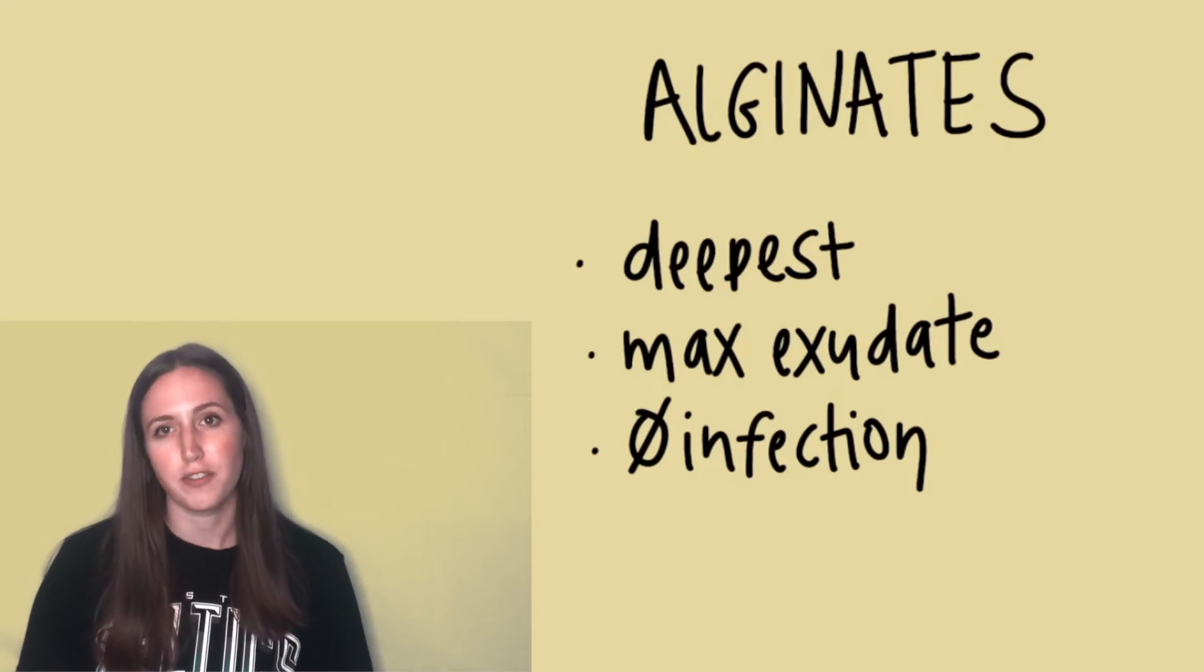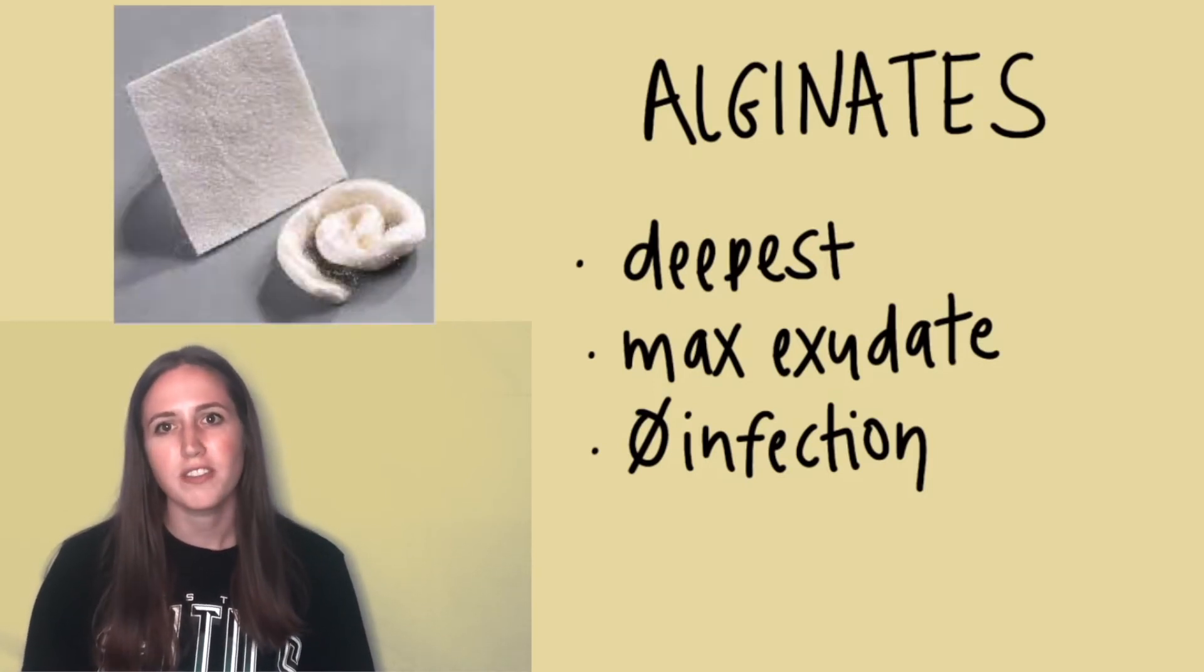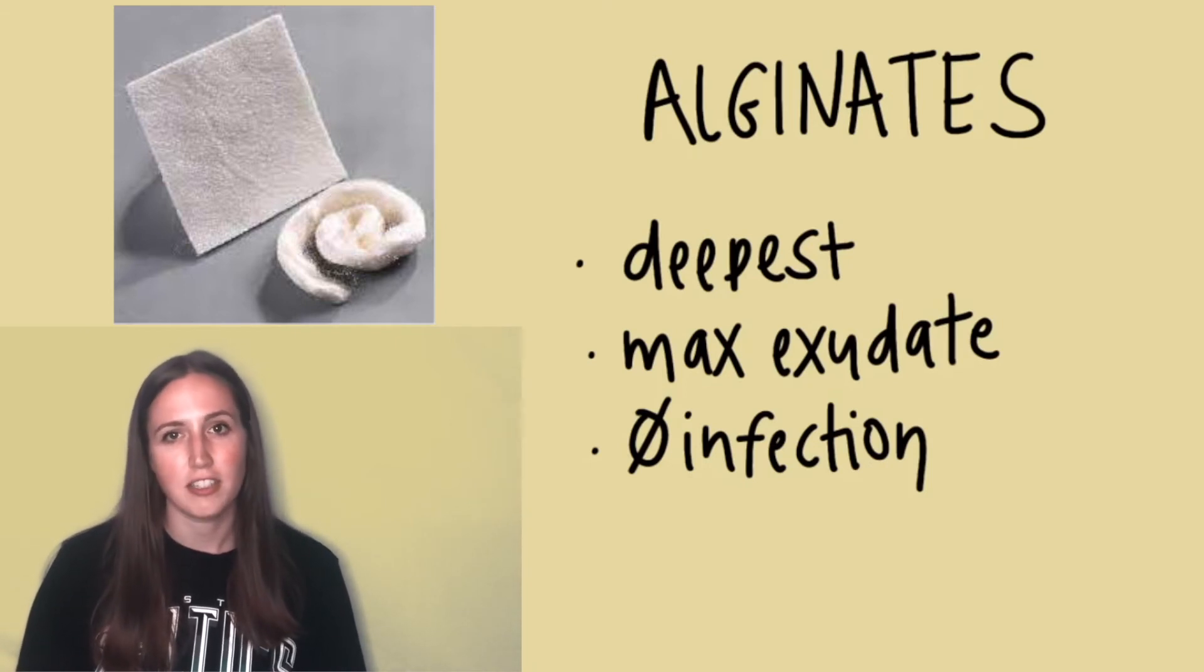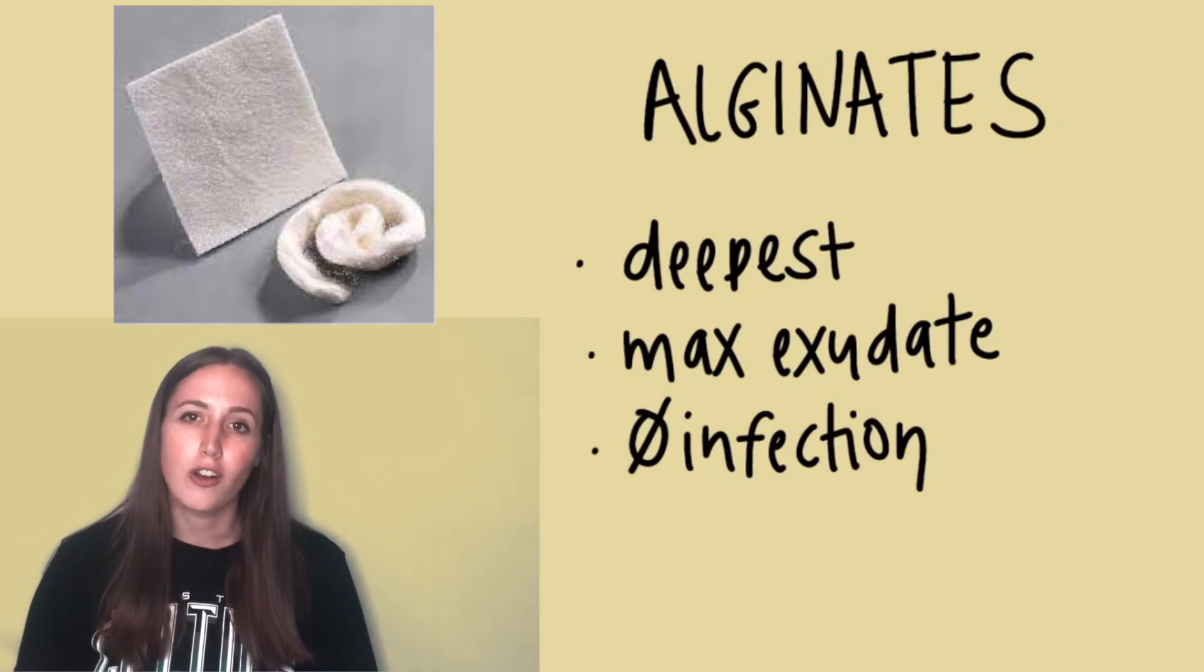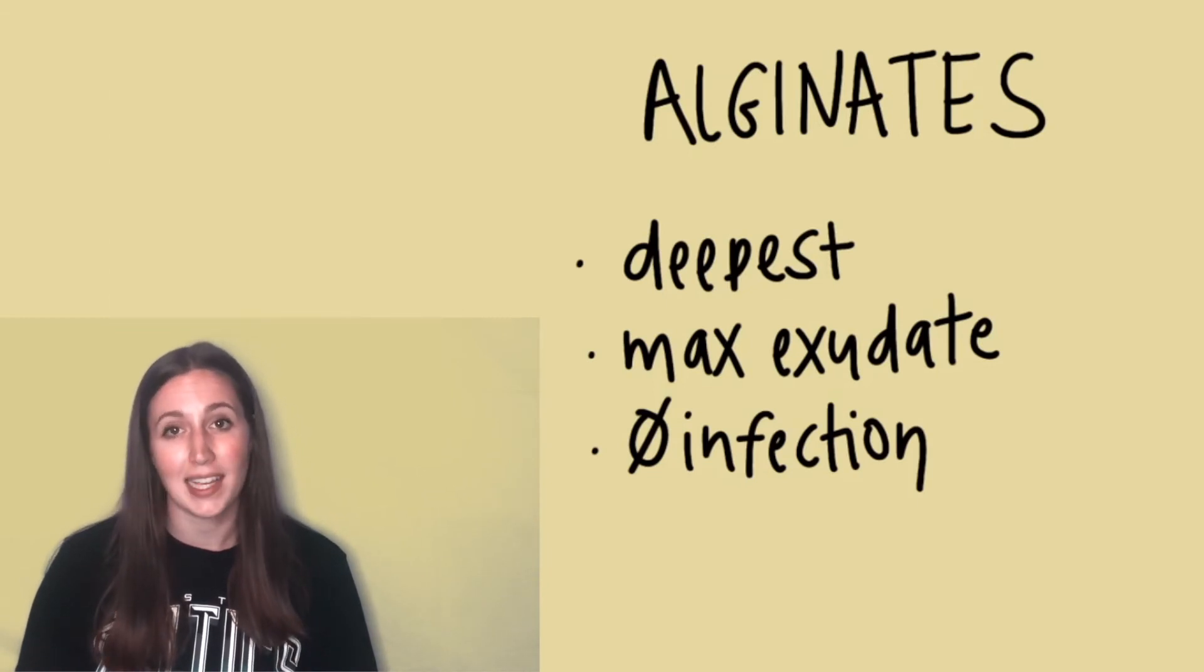Alginates are also really good for infected wounds, as most infections are highly exudative, and the non-occlusive nature of the dressing doesn't trap the bacteria in the wound. Alginates can also be impregnated with antimicrobials like silver or iodine.